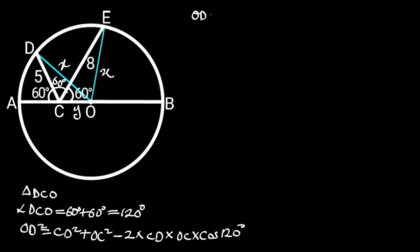OD is equal to X. CD is equal to 5. OC is equal to Y. And cos 120 degrees is equal to minus 1 over 2.